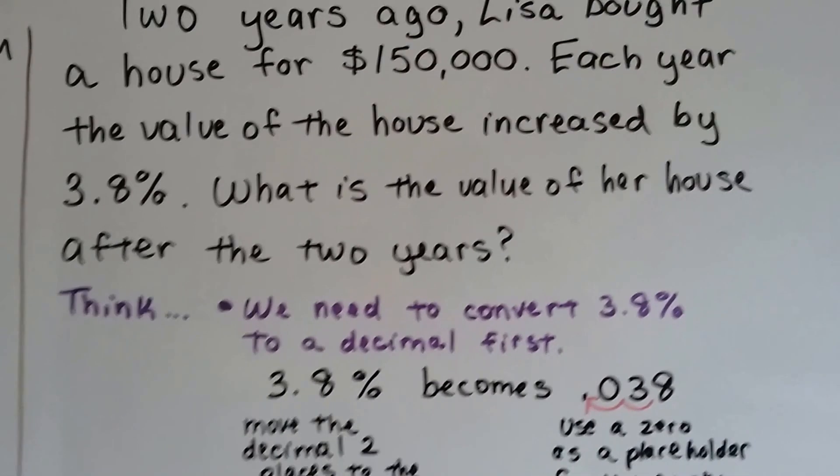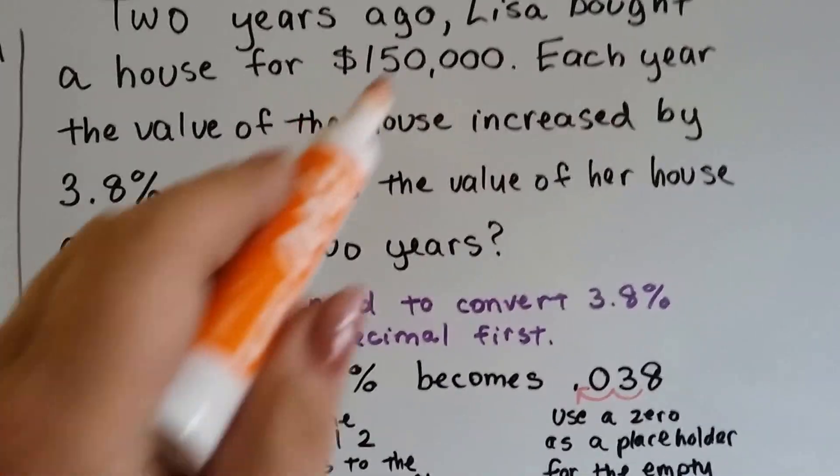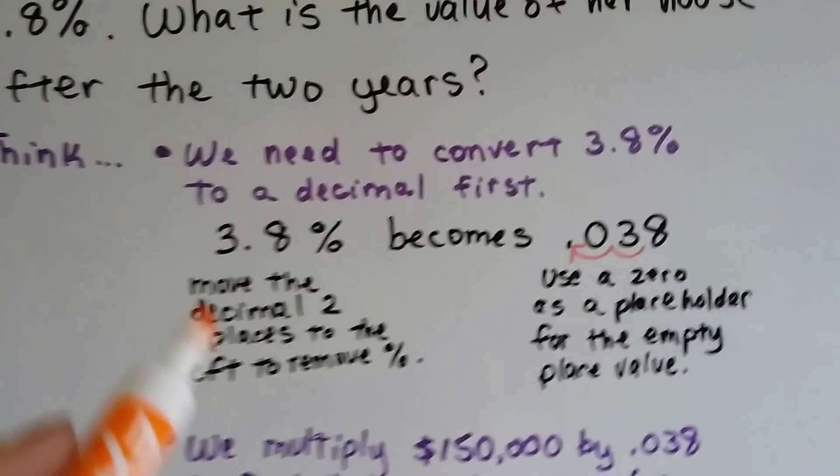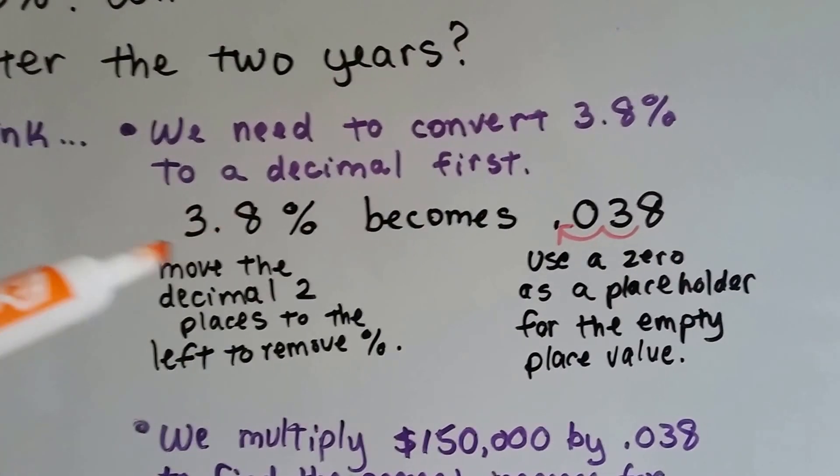So we think we need to convert that 3.8% to a decimal first because we're going to multiply it to that 150,000. So 3.8%, we move the decimal place two spots over, two places to the left to remove that percentage sign.